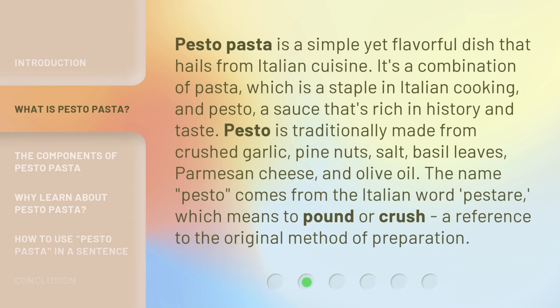Pesto pasta is a simple yet flavorful dish that hails from Italian cuisine. It's a combination of pasta, which is a staple in Italian cooking, and pesto, a sauce that's rich in history and taste. Pesto is traditionally made from crushed garlic, pine nuts, salt, basil leaves, parmesan cheese, and olive oil.